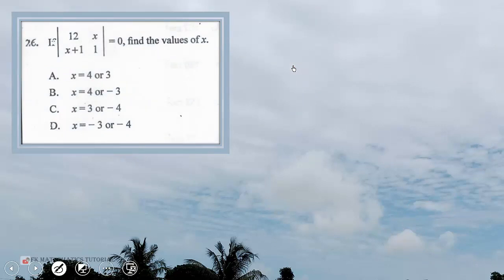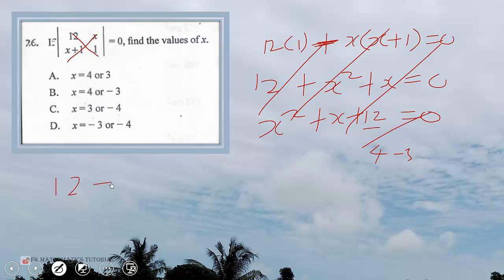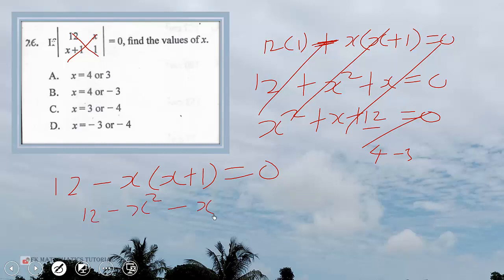Question 26: if the determinant of the matrix with entries 12, x, x plus 1, 1 equals 0, find the values of x. The determinant means this times this minus this times this equals 0: 12 times 1 minus x times (x plus 1) equals 0, giving us 12 minus x squared minus x equals 0.